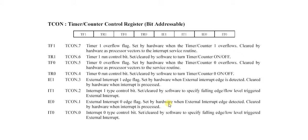Now let's move on to IE1. IE1 is the external interrupt 1 flag. It is set to 1 when a high-to-low signal is received on port 3, bit 3. It is cleared when the processor vectors to the interrupt service routine at program address 0013H. When port 3 bit 3 receives a high-to-low signal, IE1 is set to 1. This is for external interrupts.